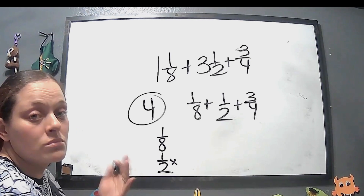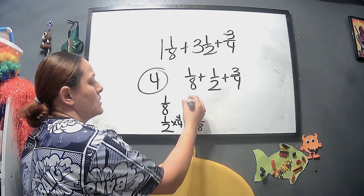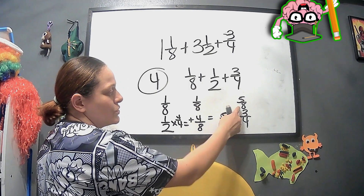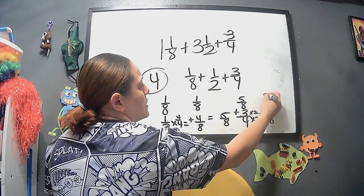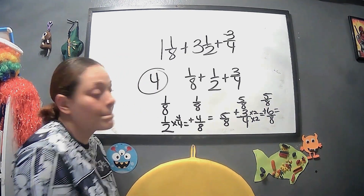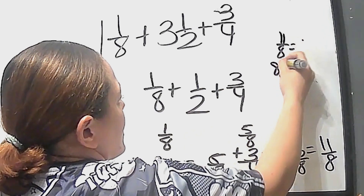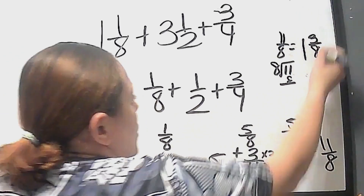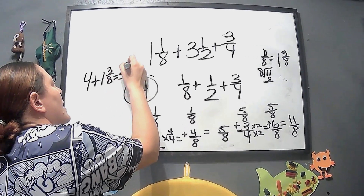Let's do 1 eighth plus 1 half first. We'll change the denominator 2 to 8 — multiply by 4, and 1 times 4 is 4 over 8. Adding 1 eighth gives us 5 eighths. Now add 3 fourths: multiply by 2, giving us 6 over 8. So 5 eighths plus 6 eighths is 11 eighths — an improper fraction. 8 into 11 is 1 with remainder 3, so that's 1 and 3 eighths. Don't forget the 4: 4 plus 1 and 3 eighths equals 5 and 3 eighths.